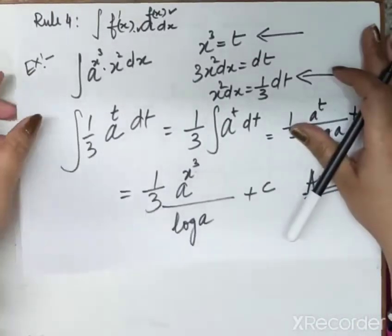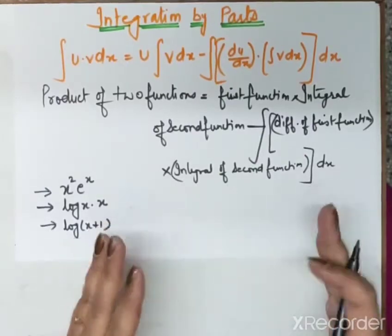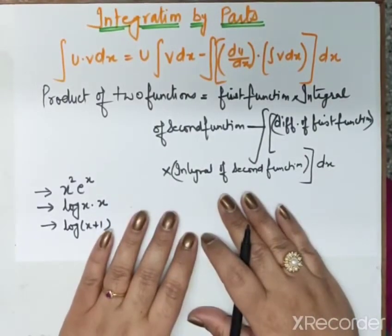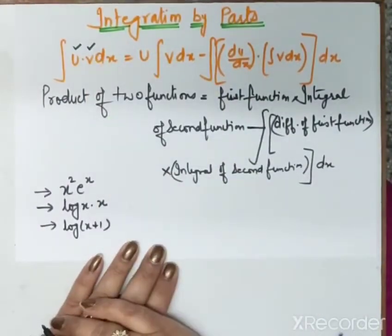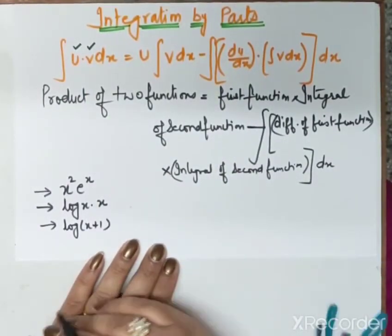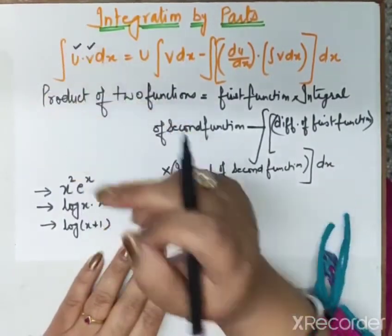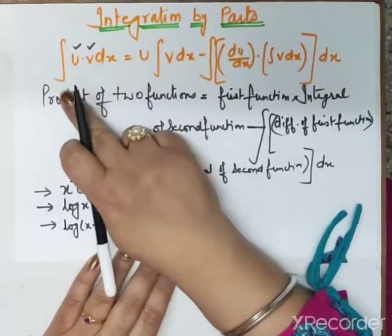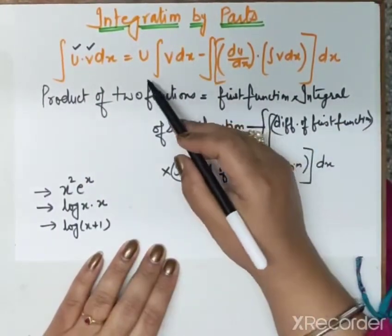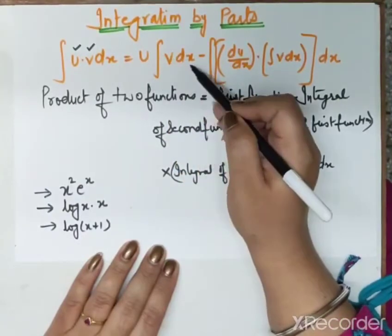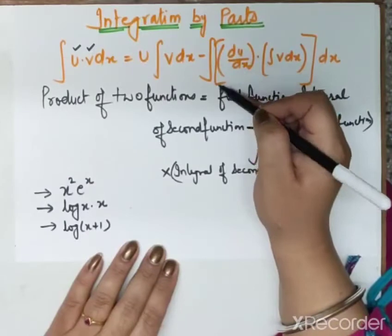This is the simplest way — we simplified our question by applying integration by substitution Rule 4. This is the way to solve all questions related to integration by substitution. Now we come to integration by parts.